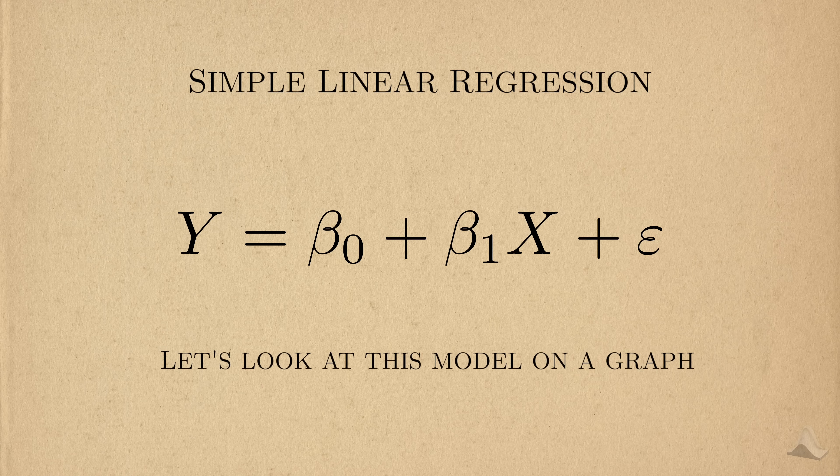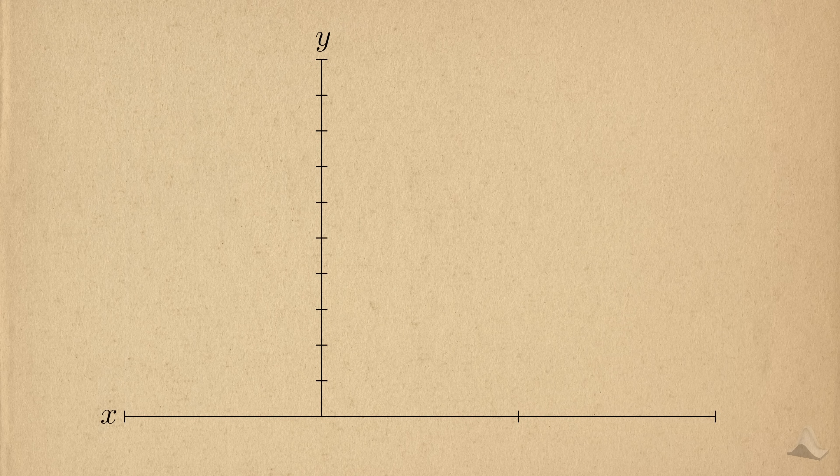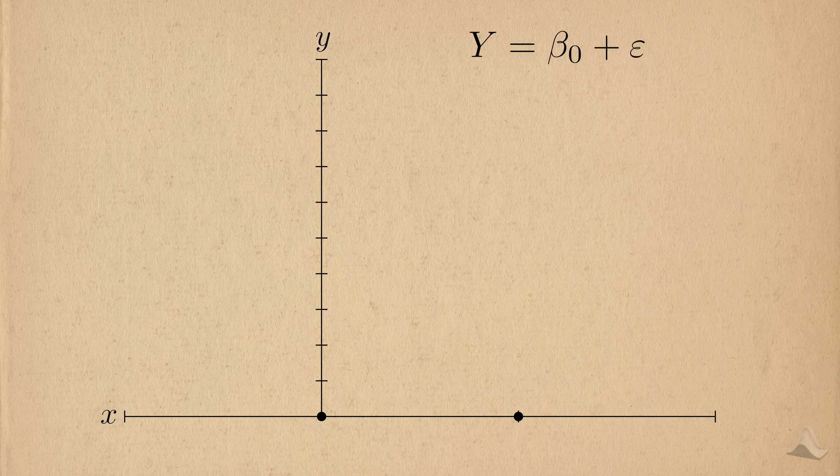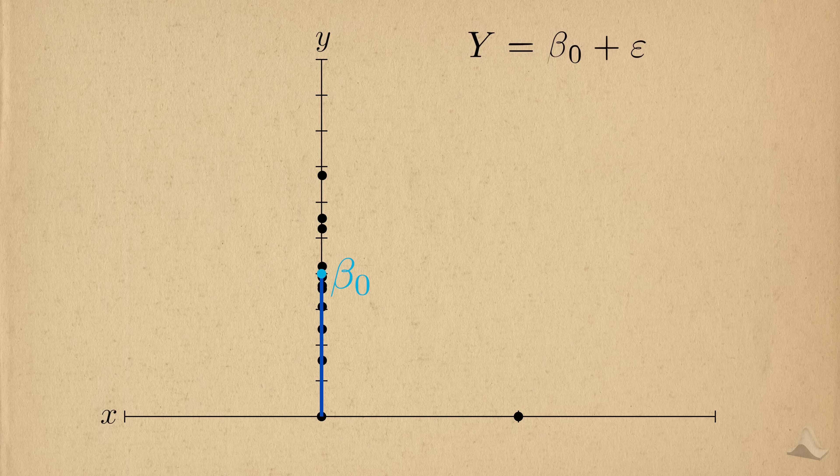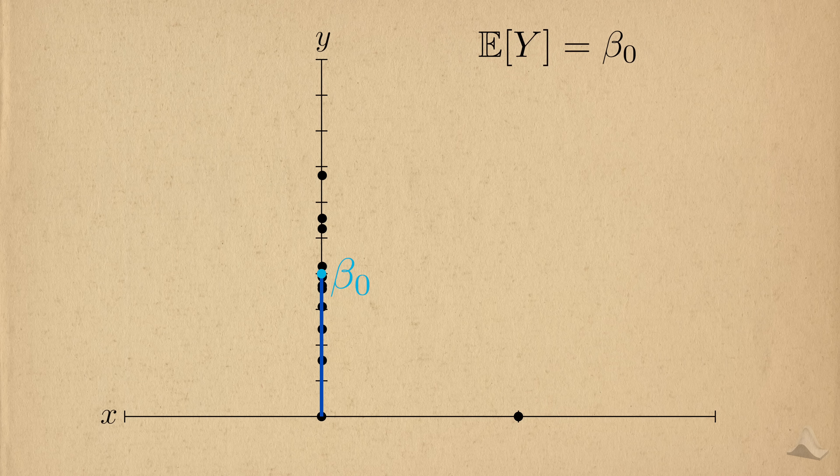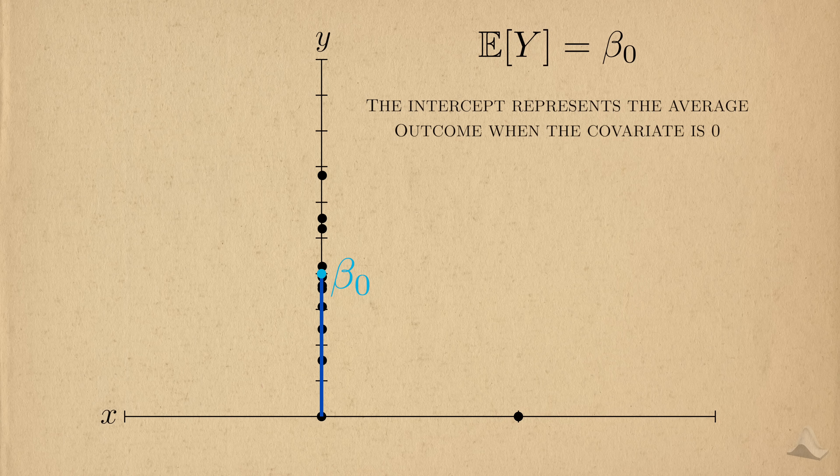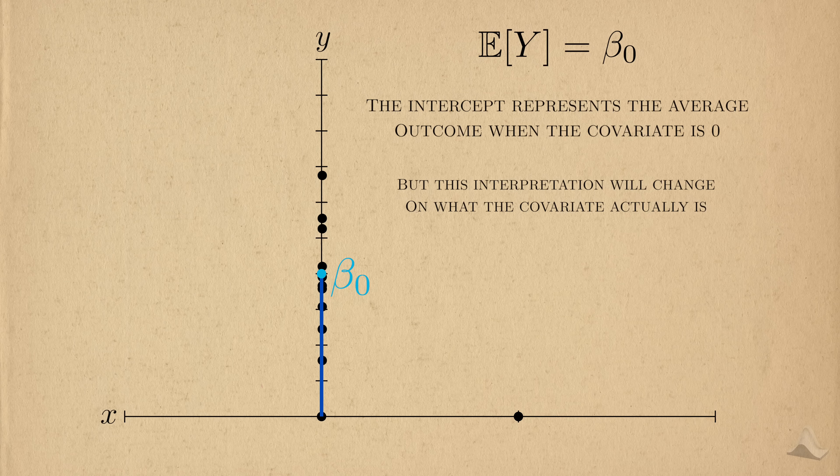To make sense of the model, it's better to look at a graph. And for simplicity, I'm going to assume that x is binary, taking only 0 or 1 as values. When x is 0, we're left with this expression. This implies that the average outcome is centered at beta 0, and will vary around it according to the variance in the noise. We can isolate beta 0 by taking the expectation, or average value of this whole expression. Mathematically speaking, this means that we can interpret beta 0 as the average outcome when the covariate is 0. This interpretation will change depending on what the covariate actually is, and I'll cover two examples in a bit.